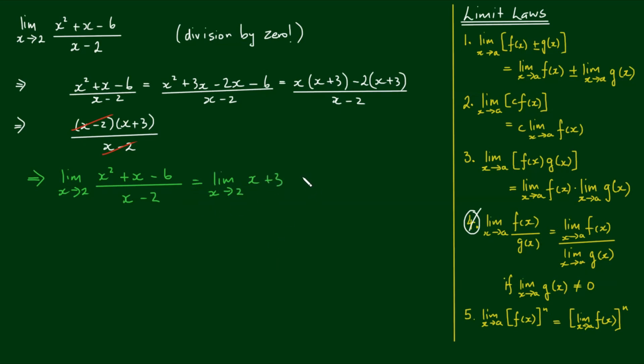So now as x approaches 2, we have a case of 2 plus 3, which equals 5. Therefore, the limit as x approaches 2 of x squared plus x minus 6 on x minus 2 is equal to 5.